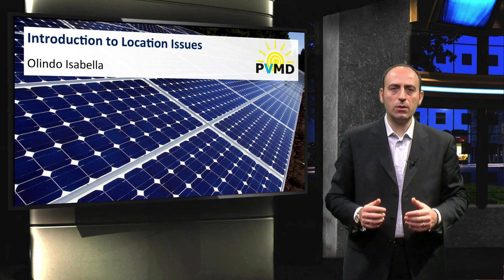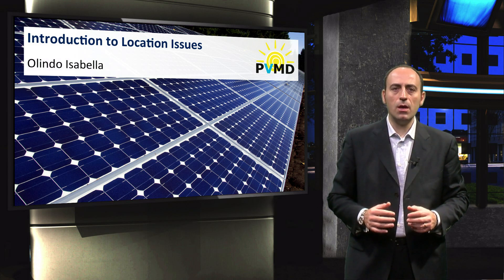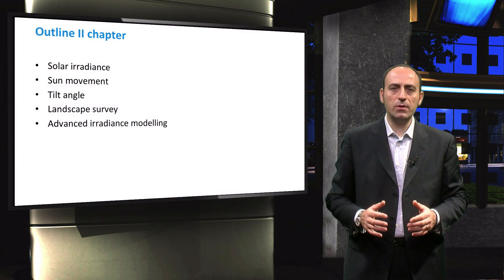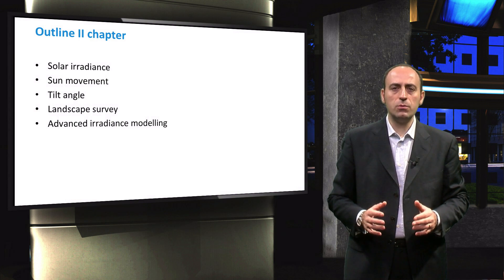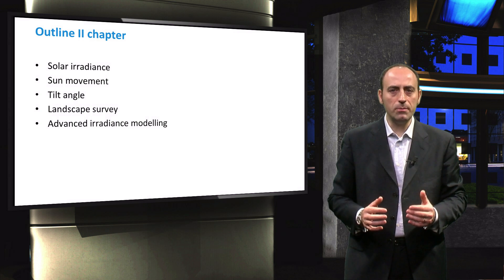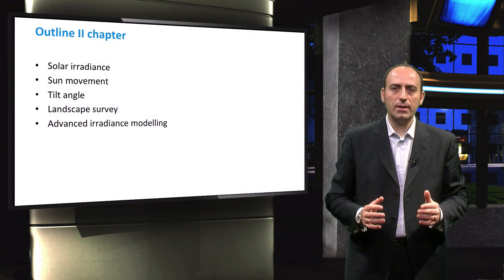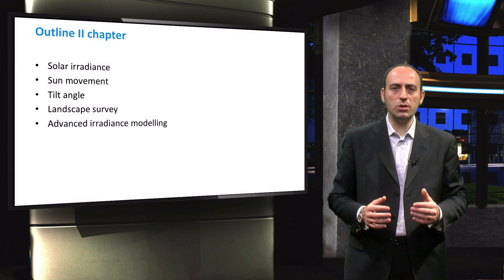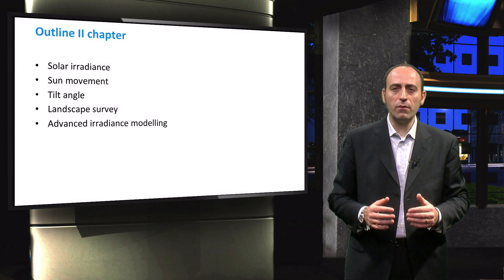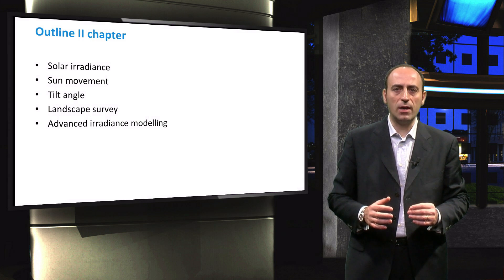Welcome to the second chapter of this course, which deals with location issues. This chapter is divided into five main points. First, we will start with some concepts and the terminology related to solar irradiance. Then we will discuss the fundamentals to calculate the position of the Sun in the sky. You will be able to do it for every location on Earth at an arbitrary time and date.